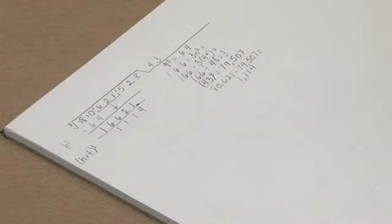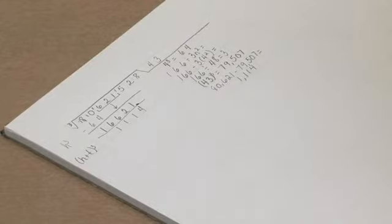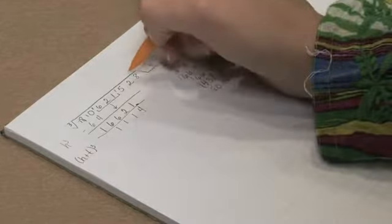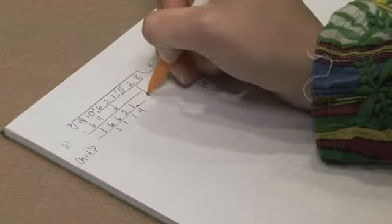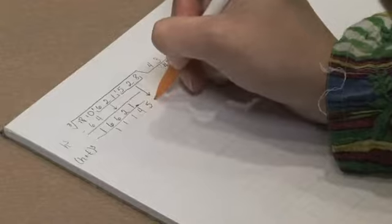And then our next step is to research our trial root for the units place. So I'll bring down the last period, which is 528.